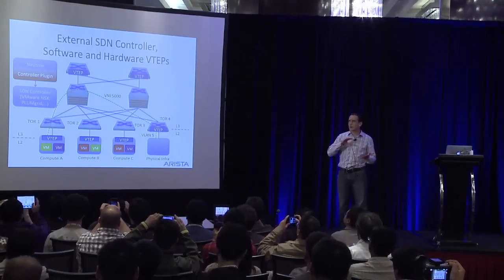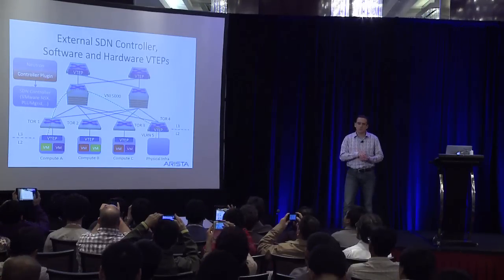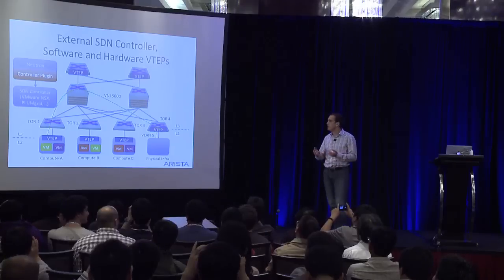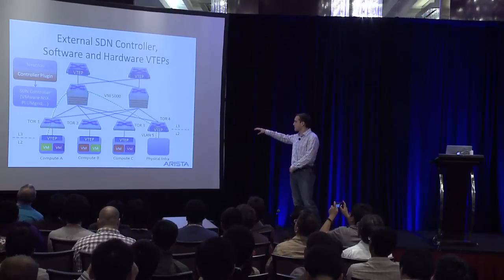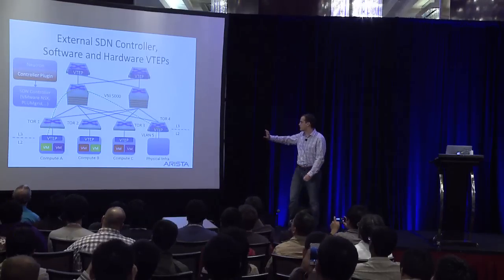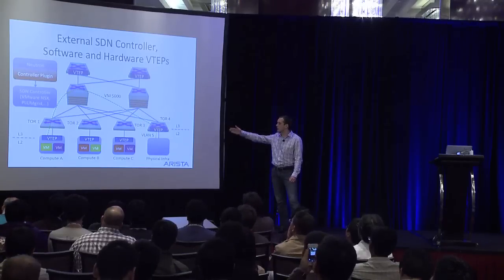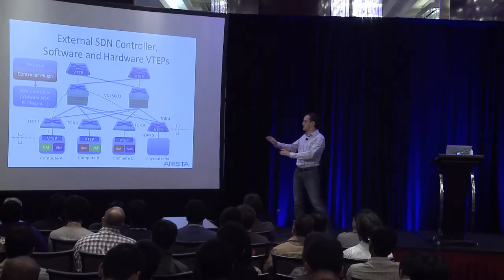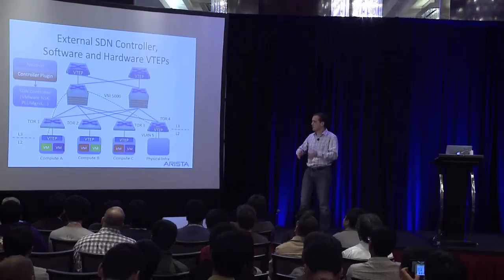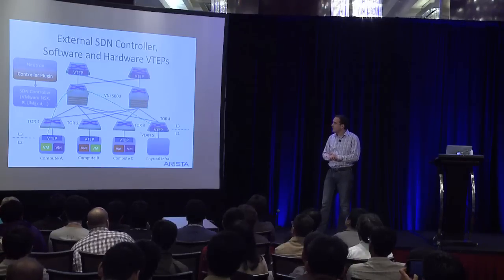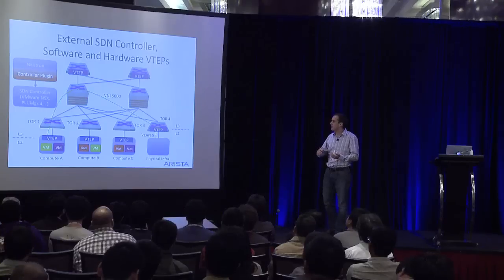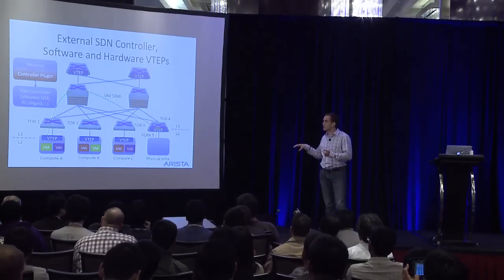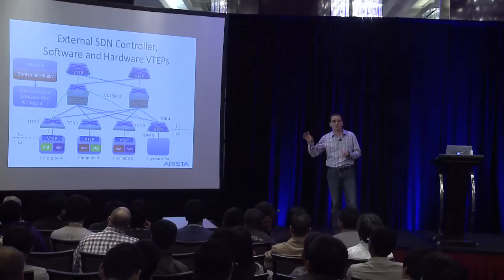The first design I want to talk about is running OpenStack on top of VXLAN using an external SDN controller, software VTEPs on all compute nodes, and hardware VTEPs for places with actual performance requirements. In this picture, I've got core switches, top-of-rack switches, compute nodes A, B, and C, some physical infrastructure connected to a gateway serving as a VTEP, and VTEPs at the north-south boundary to terminate VXLAN tunnels. You can mix and match where you have physical infrastructure. In the context of Arista, we've partnered with VMware NSX as well as PlumGrid to provide integration with the SDN controller with our hardware gateways.